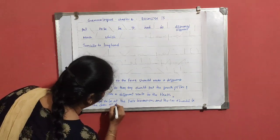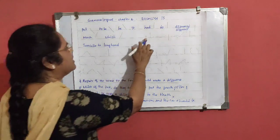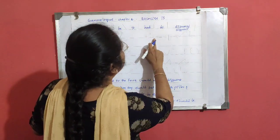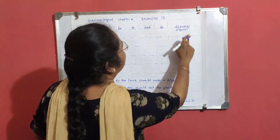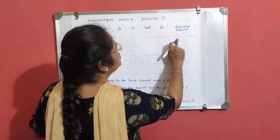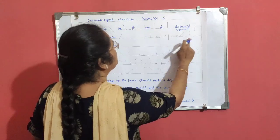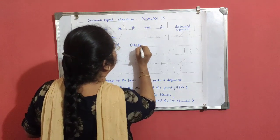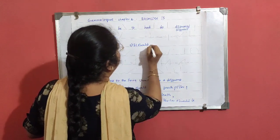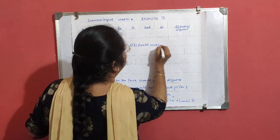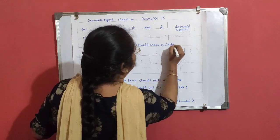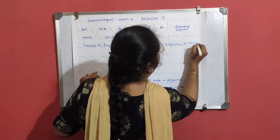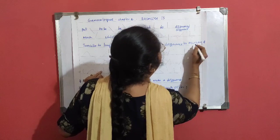At two - T, W, O. They hope to be at the fair tomorrow, and the car should be at the door at two. The next sentence - it should make a difference to Marre and Hague. Since two lines are marked here, the first letter should be capital. Fifth one: It should make a difference to Marre and Hague.